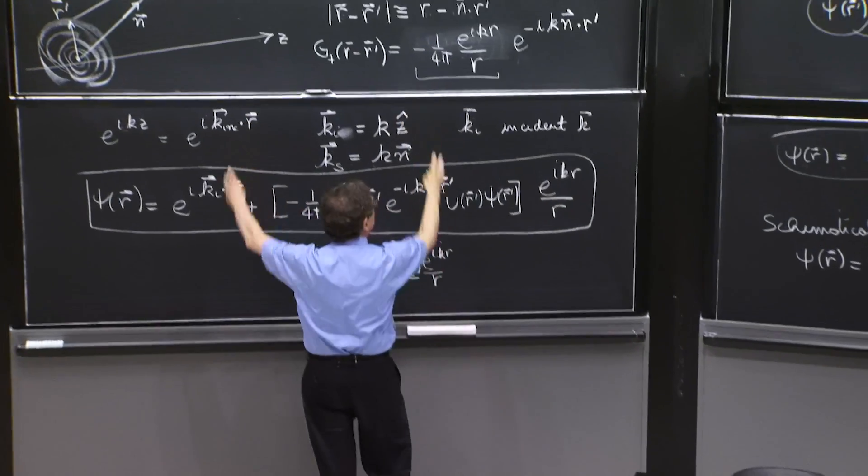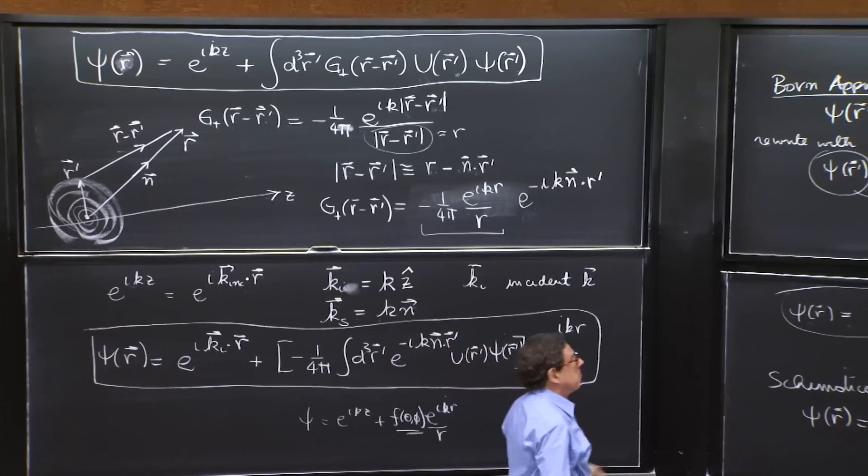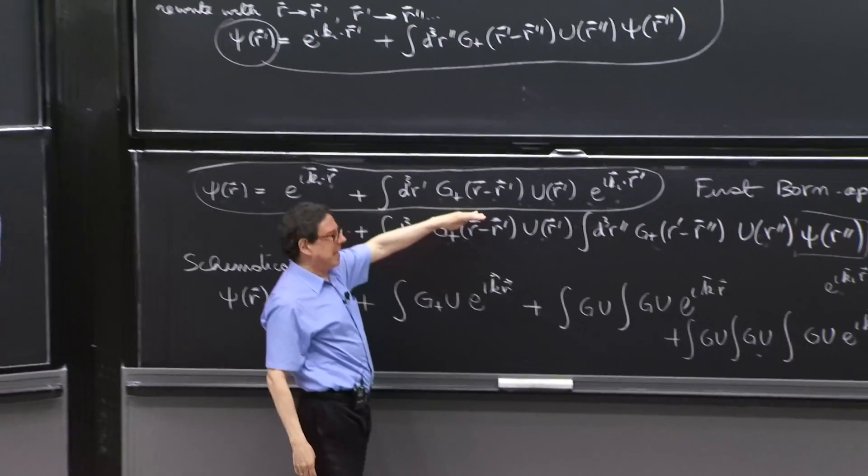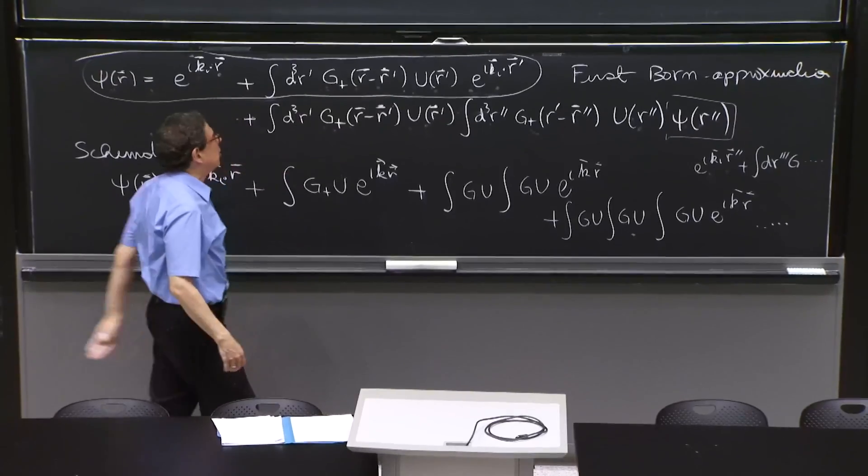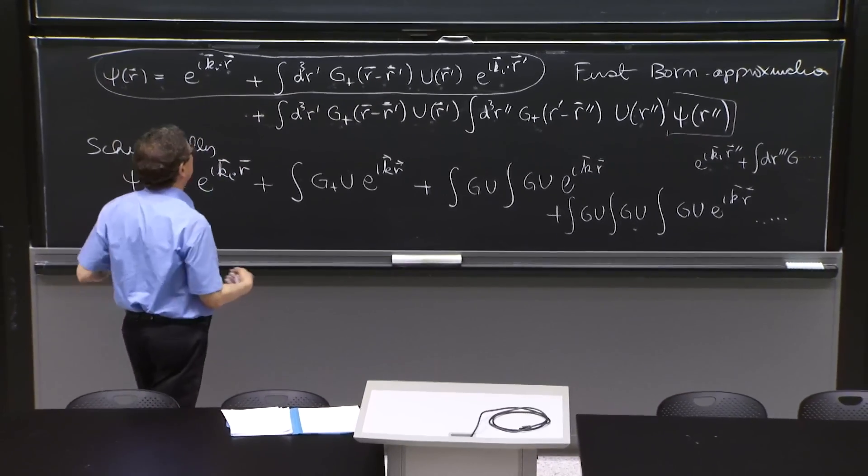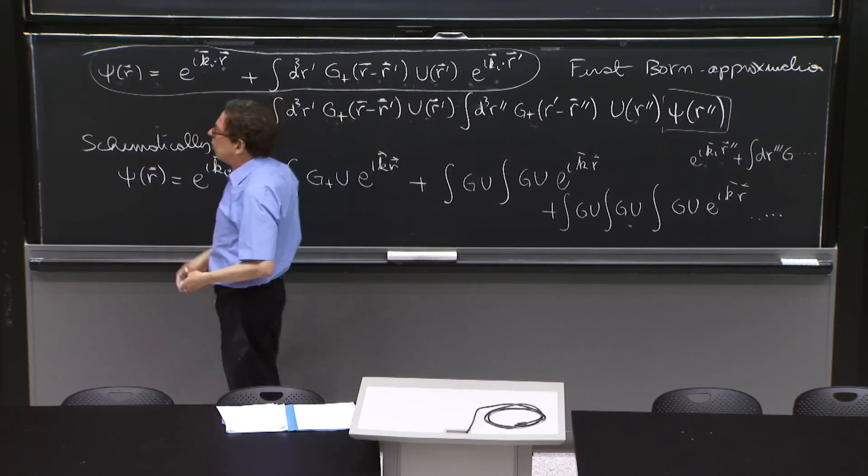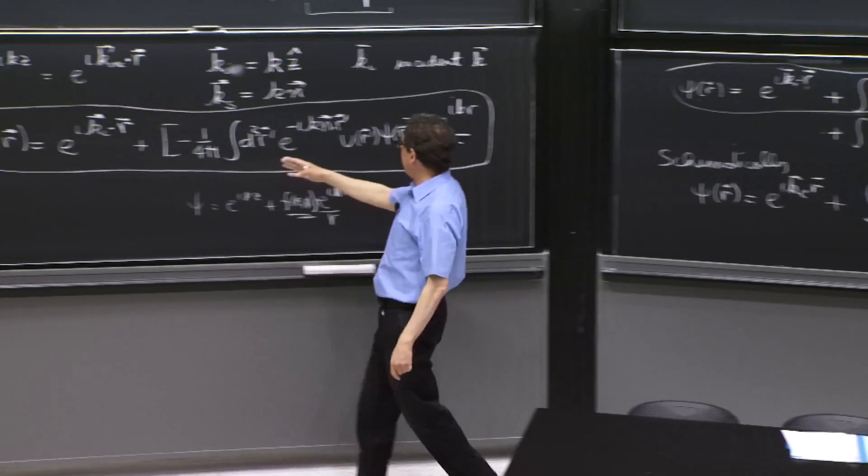We were simplifying the second term, the integral term, by using what the Green's function looked like. We simplified this term. So all what we did here was valuable.